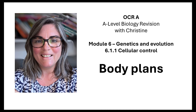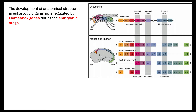Hi and welcome to my OCR-A A-level biology revision session with me, Christine. Today's lesson, I want to look at the body plans, which is part of your module 6 cellular control. The development of anatomical structures in eukaryotic organisms is regulated by what we know as the homeobox genes, and this is regulated during the embryonic stage.